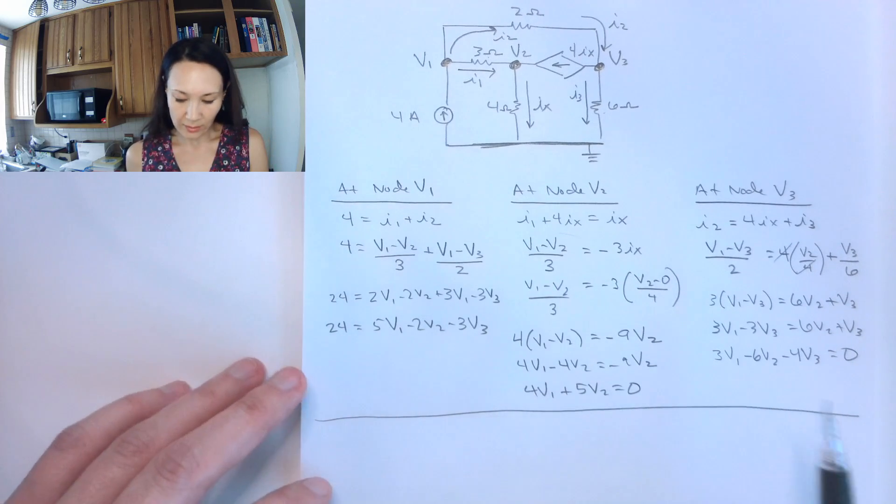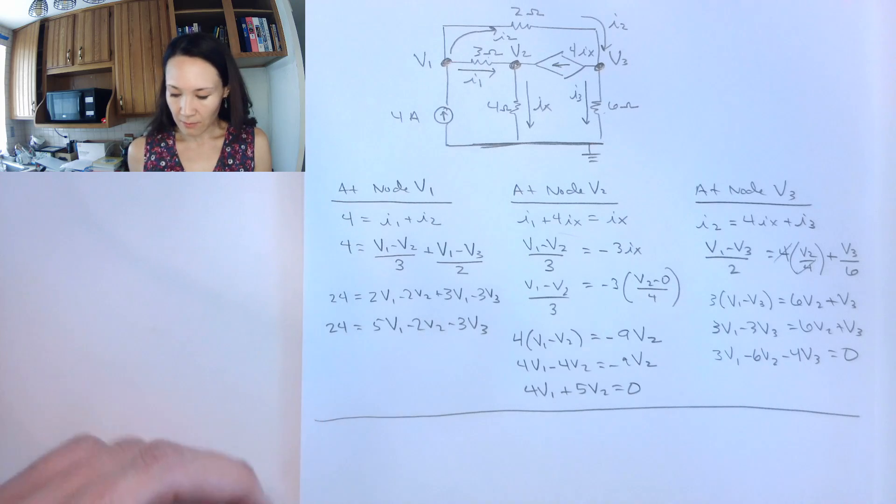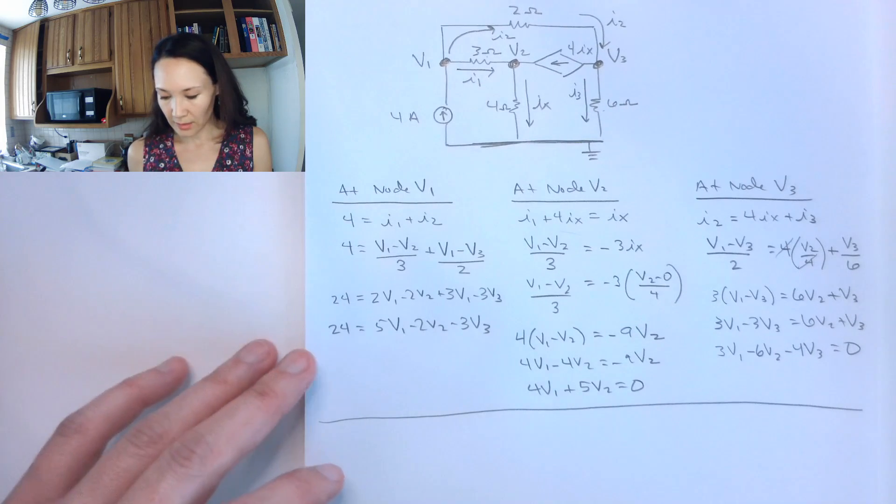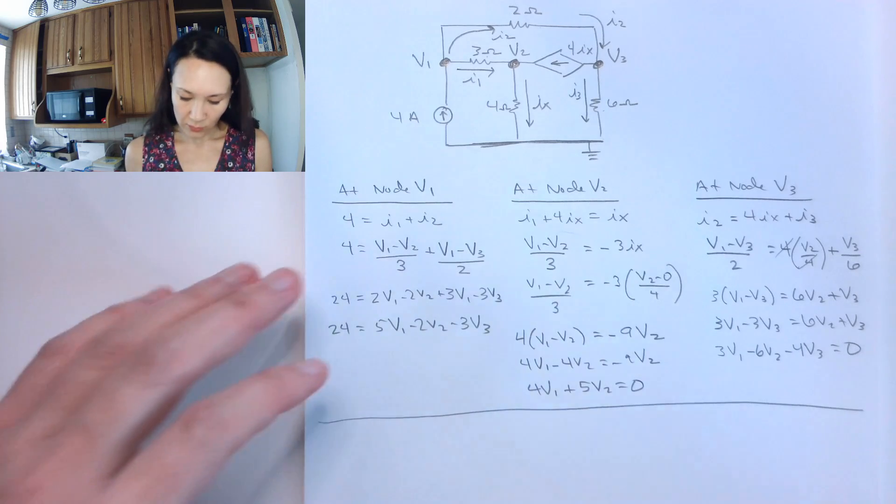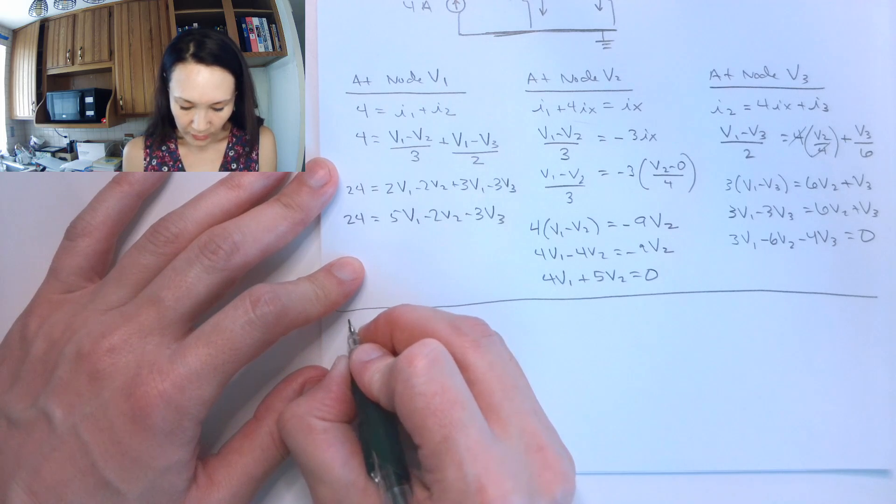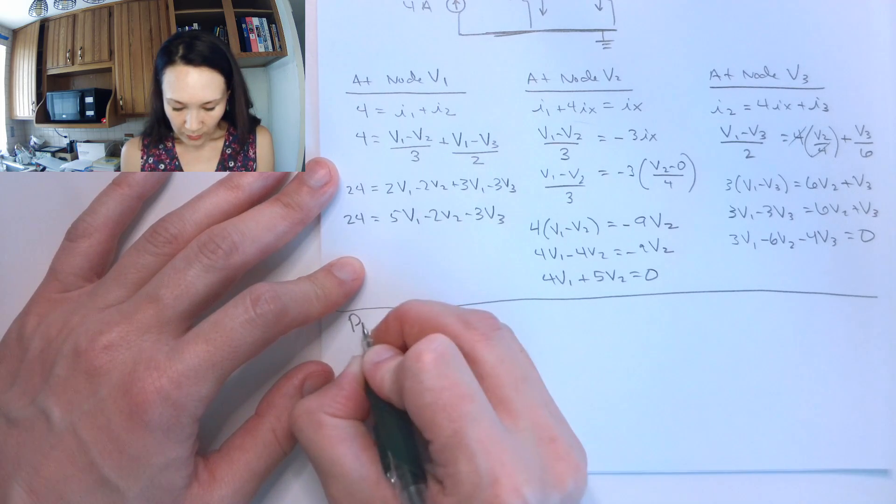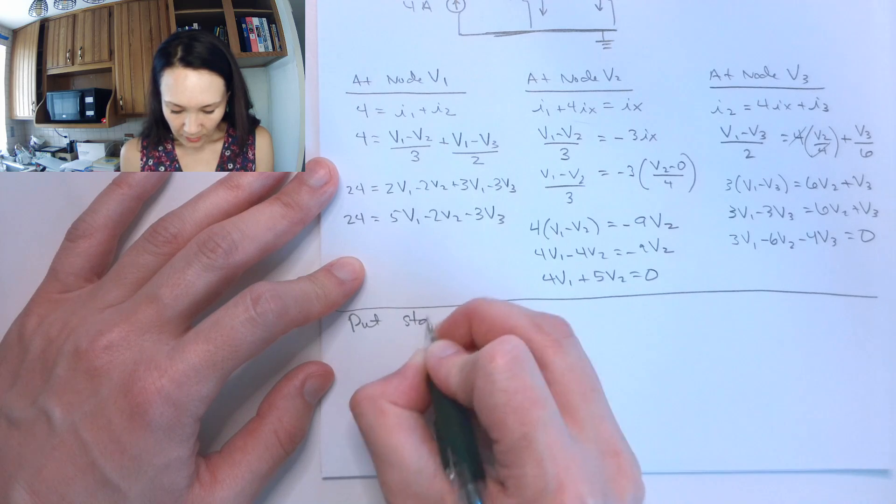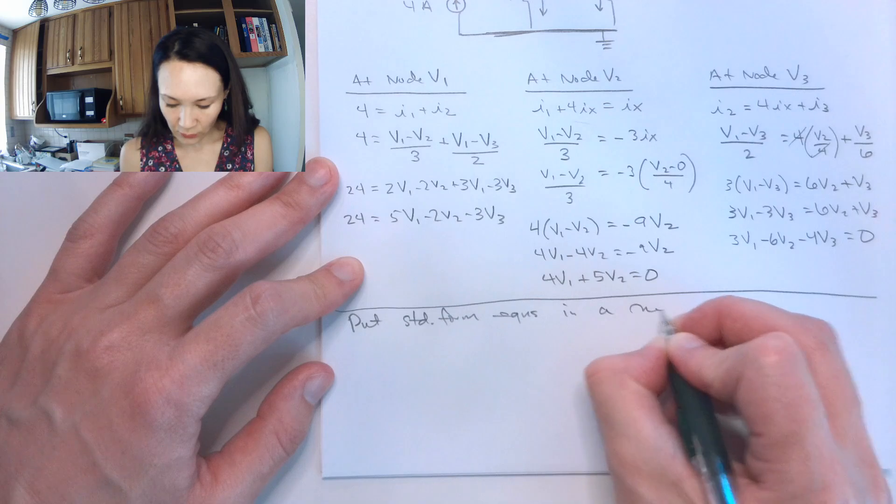It's a little bit messy. An easier way to do this is to actually put this into a matrix and use linear algebra to solve for V1, V2, and V3. So the way we would set that up, we need to make sure that all of our equations are in standard form. And we're going to put standard form equations in a matrix.